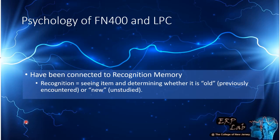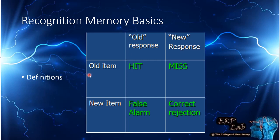In the real world, recognition might be like walking around and seeing a familiar face and identifying that person. In the laboratory, it might be seeing a word or picture studied earlier. The recognition test sets up item-response combinations: an old item called old is a hit; an old item called new is a miss; a new item called old is a false alarm; and a new item called new is a correct rejection.